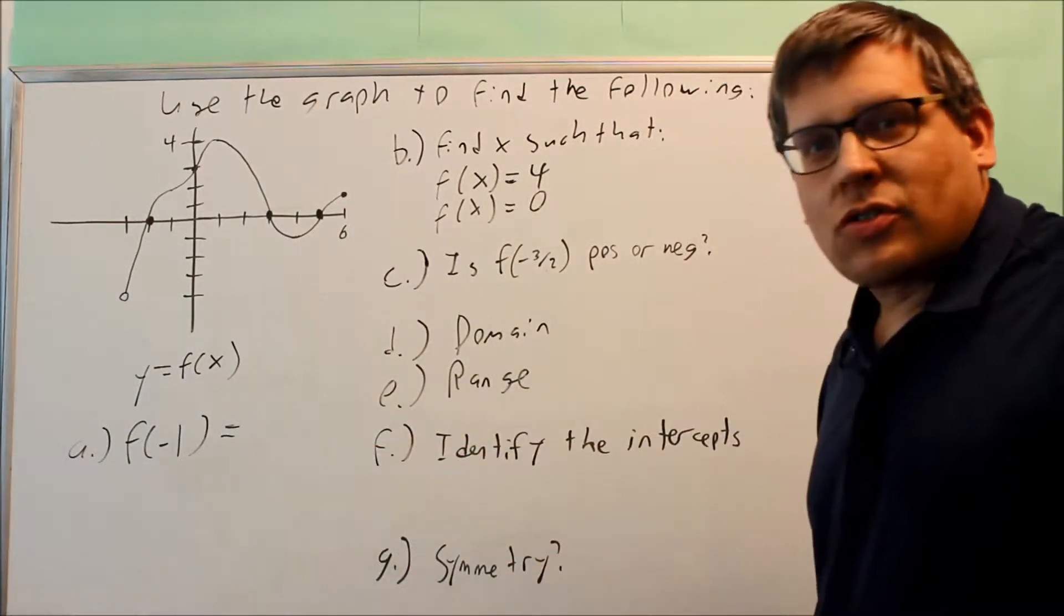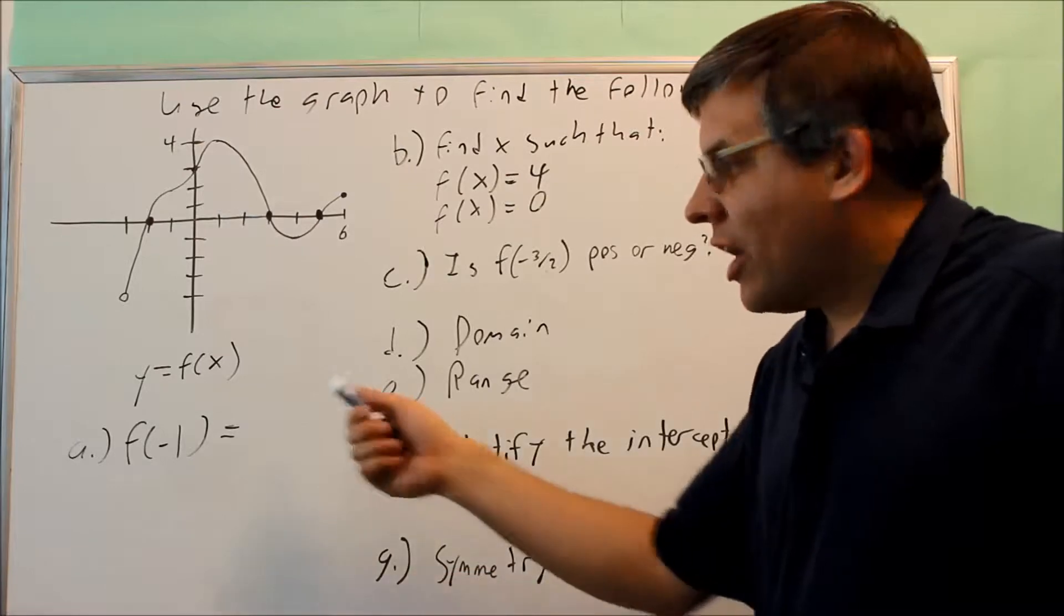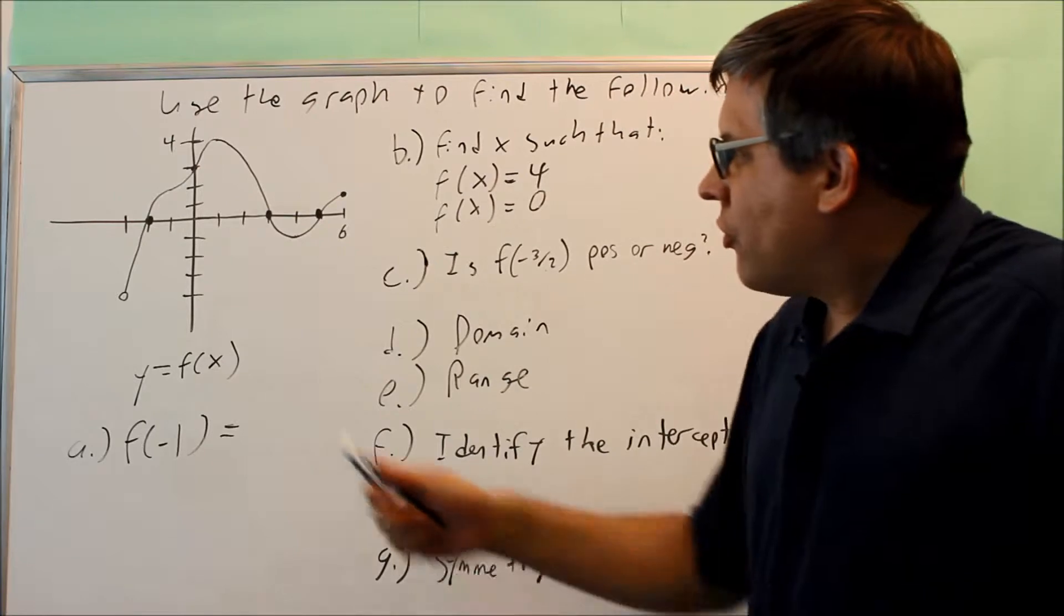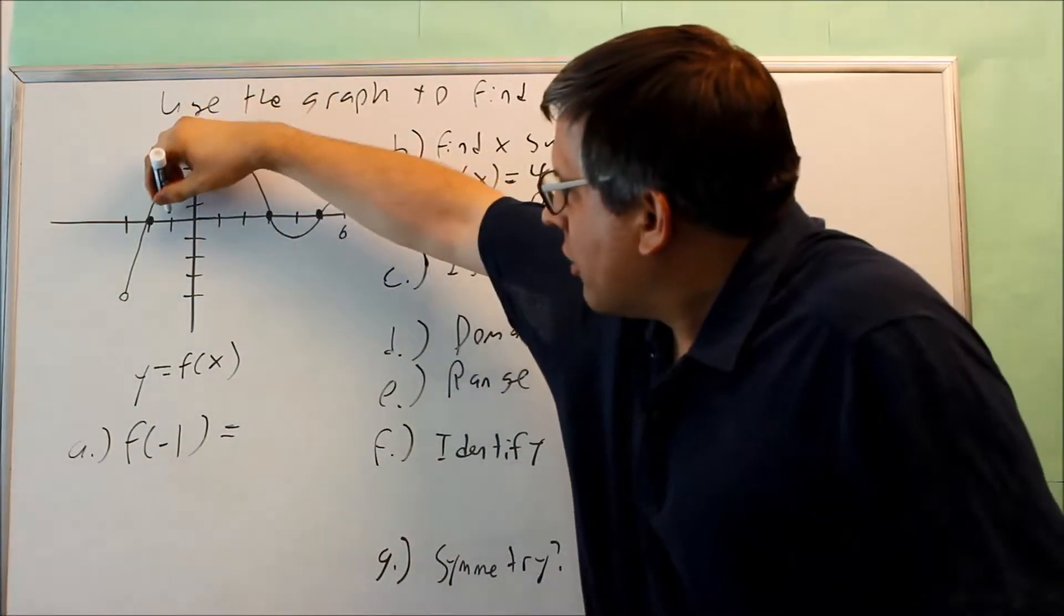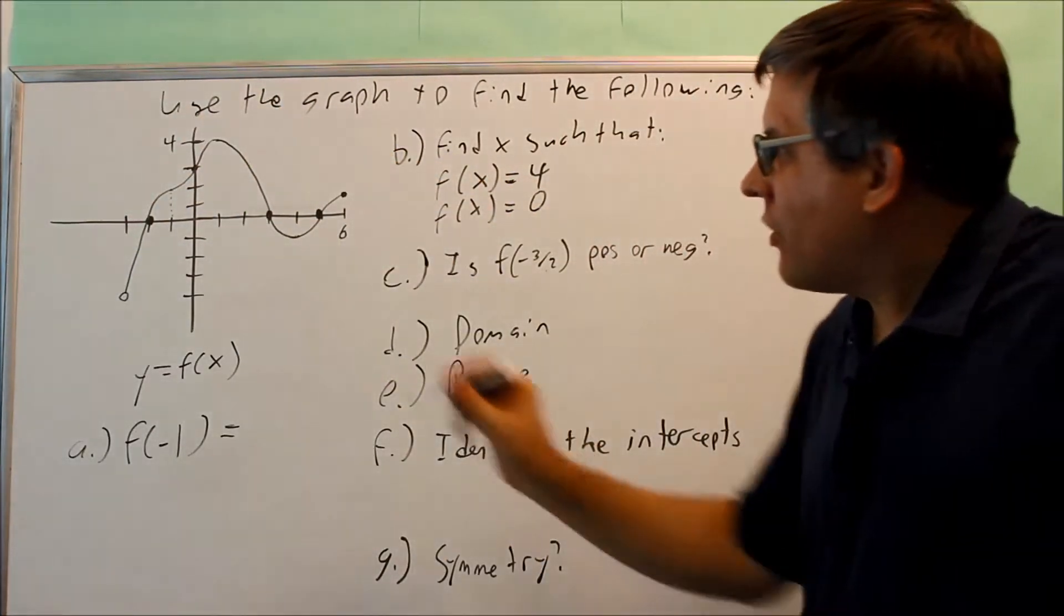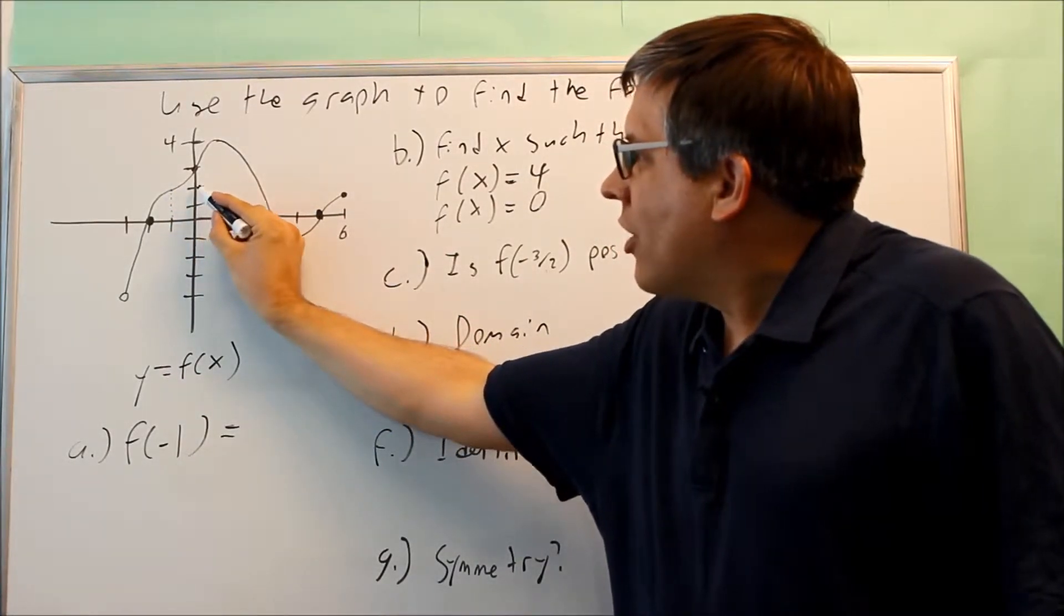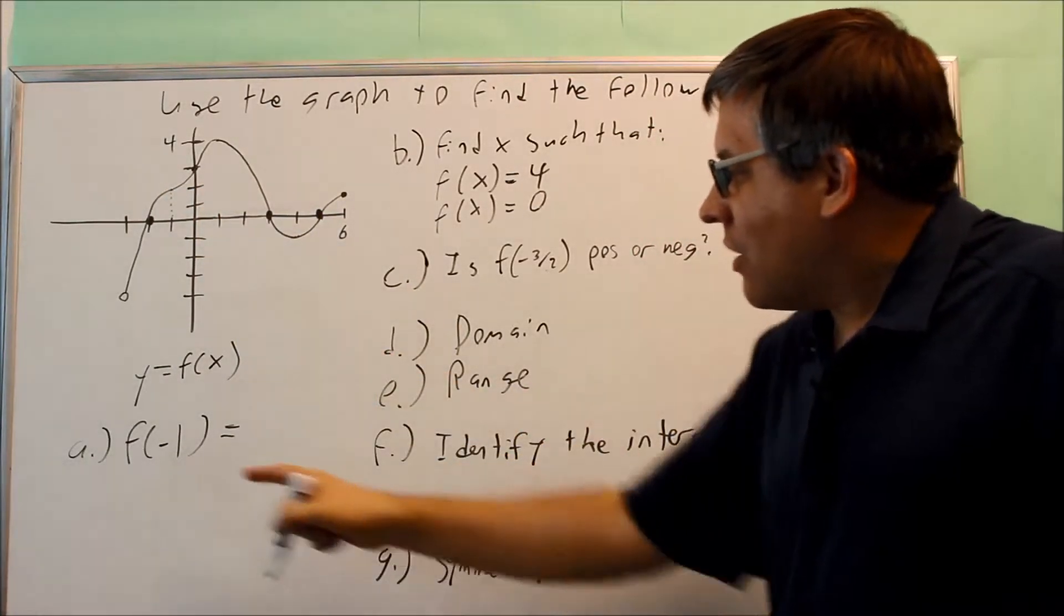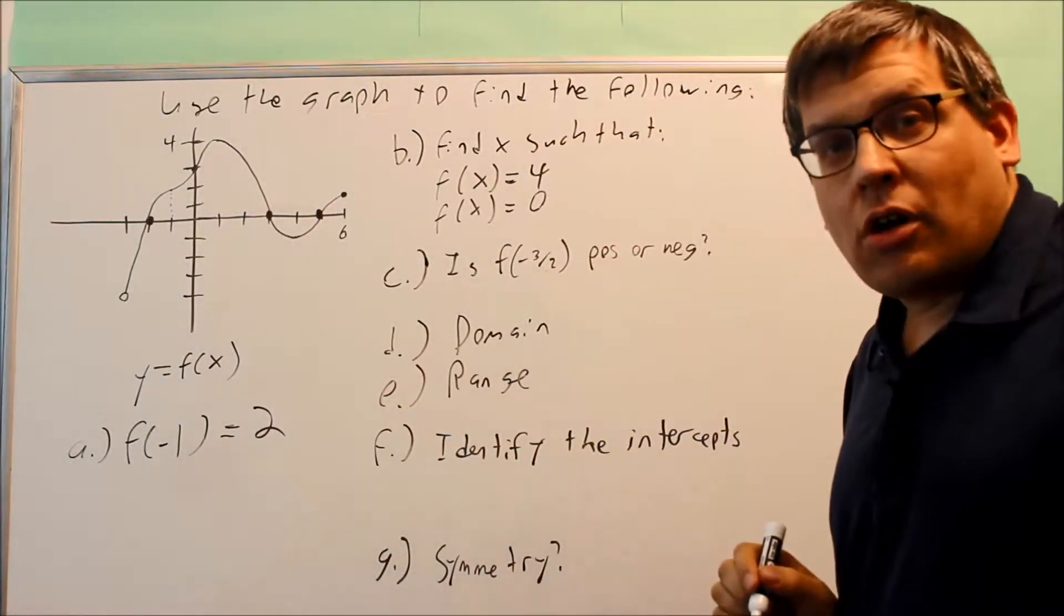So the first question asks us to find f of negative 1. What this is asking us to do is find the y value when x is negative 1. So on this graph, we're going to first start by going over to negative 1, that's going to be right here, and then we're going to go up until it hits the graph. So what we notice is at negative 1, it's hitting the graph right here, and that y value at that point is going to be 2. So we're going to say that at the x value of negative 1, the y value on the graph happens to be 2. So that's going to be our answer.